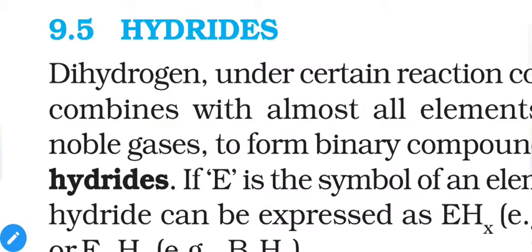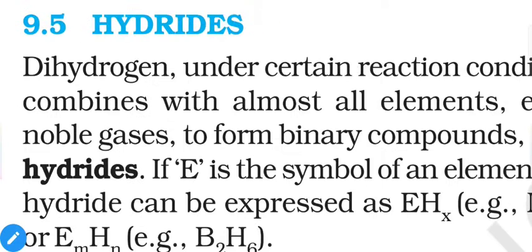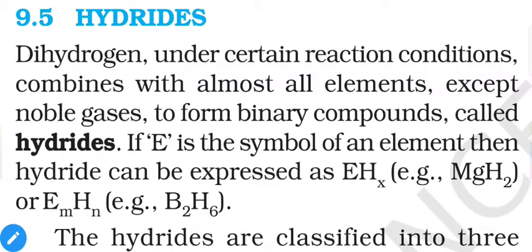Hello students. Today we are going to discuss about hydrides. Hydrides means hydrogen as a negative ion, or H minus. We will discuss three different types of hydrides, but not all of them contain negative hydrogen. Still, for convenience, we will call them hydrides whether hydrogen is neutral, negative, or positive.